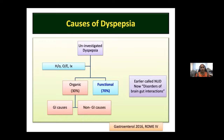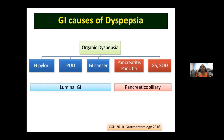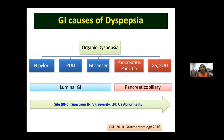Functional dyspepsia was earlier called non-ulcer dyspepsia; Rome 4 now prefers to call it disorders of brain-gut interaction. Among organic causes, GI causes include H. pylori, peptic ulcer disease, and gastric cancer. Pancreatic and biliary causes include pancreatic malignancy, pancreatic insufficiency, gallstones, sphincter of Oddi dysfunction, and biliary dyskinesia. When taking history, symptoms in the right hypochondrium, significant nausea and vomiting, LFT abnormalities, and ultrasound abnormalities favor pancreatic or biliary dyspepsia.